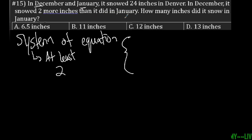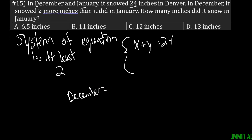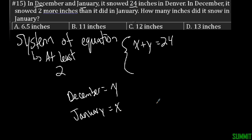So we're going to say if December and January combined is 24 inches, we can write it like this: x plus y equals 24. We're going to let December be y and January be x, so that way we have our two variables defined. And now for the second equation, since December it snowed two more inches, we're going to say y equals x plus 2.